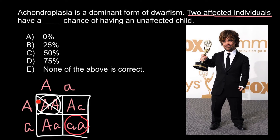After fertilization, a fetus of this genotype would stop growing at a very early stage of development. So in live births we can see only three genotypes. Therefore, the probability for our question is 1 out of 3 — one chance out of 3 live births.